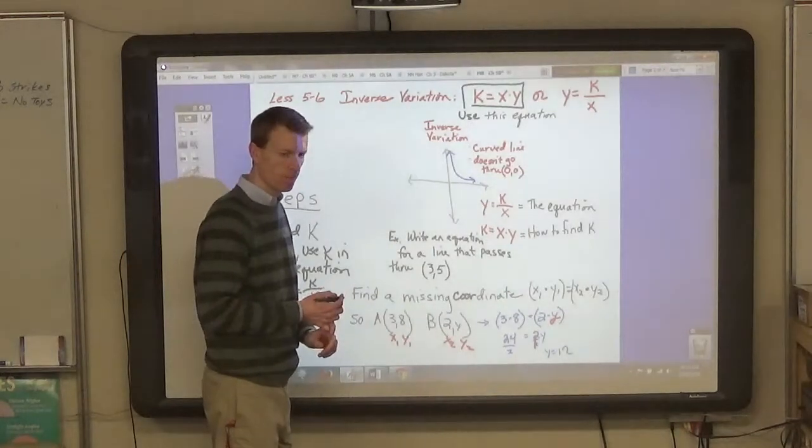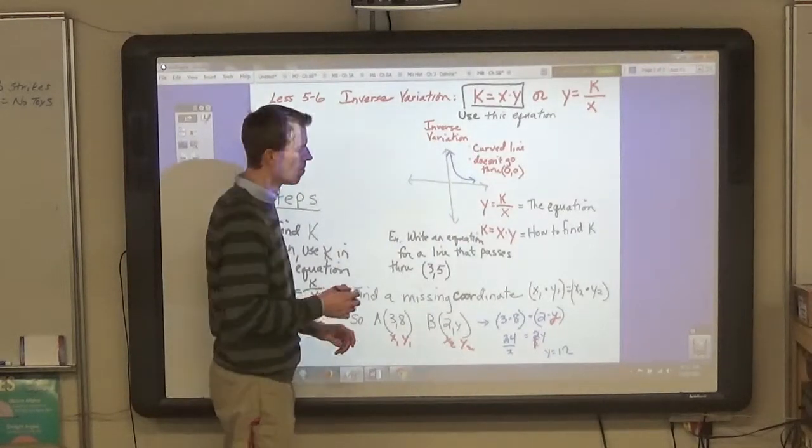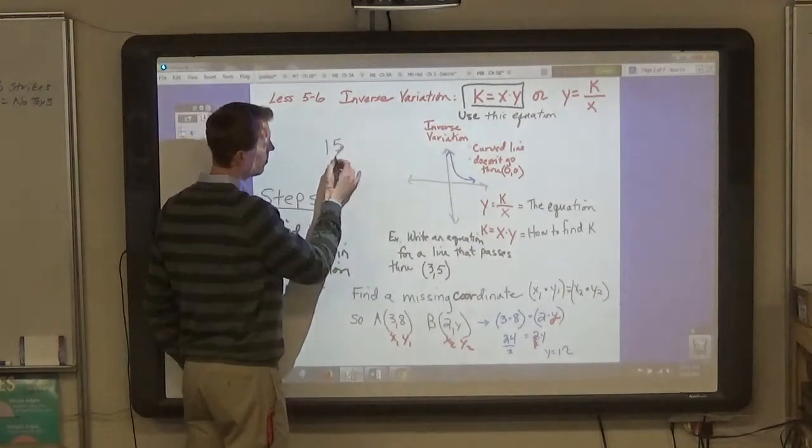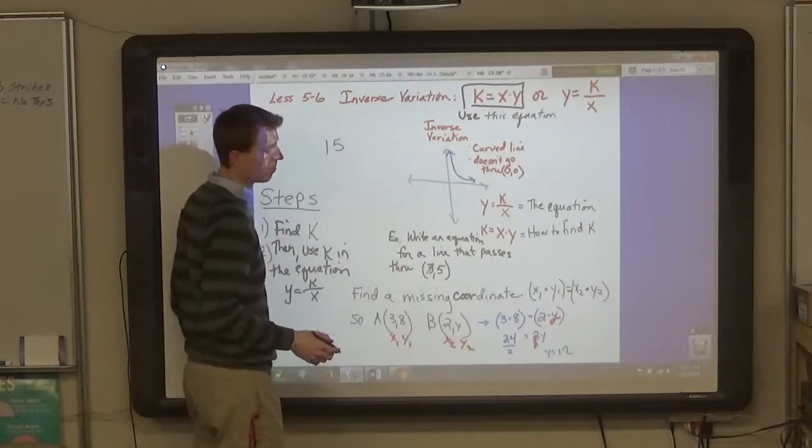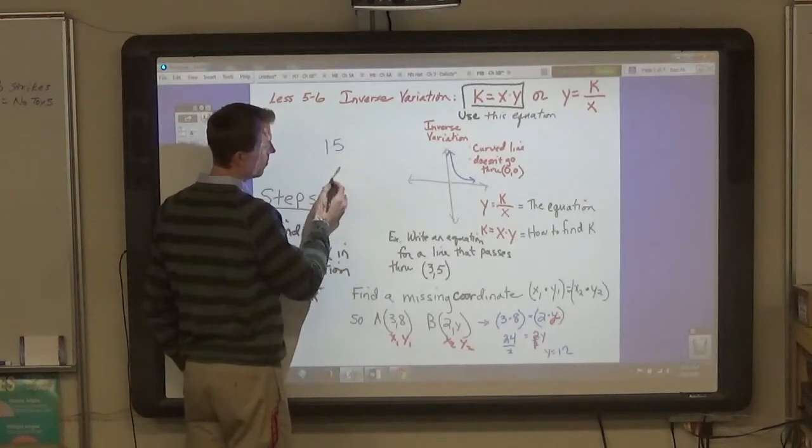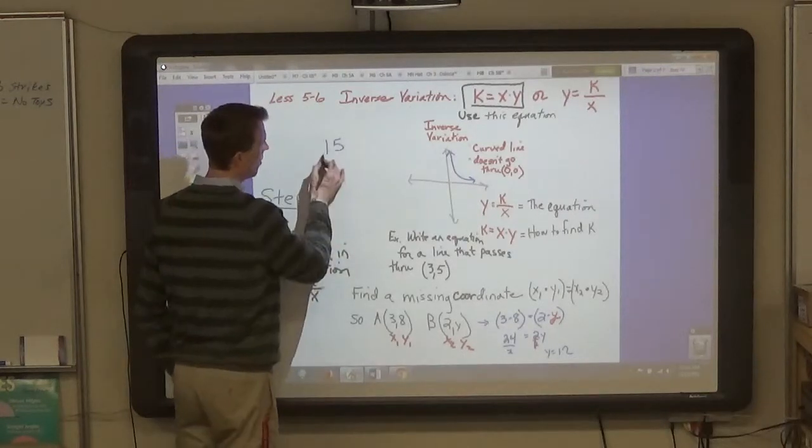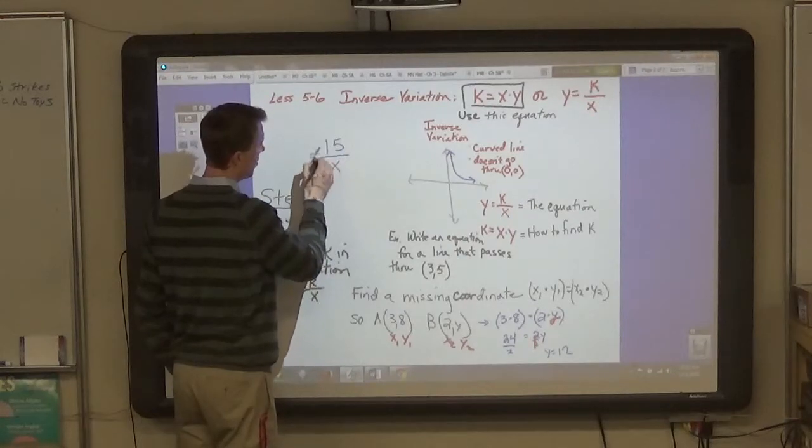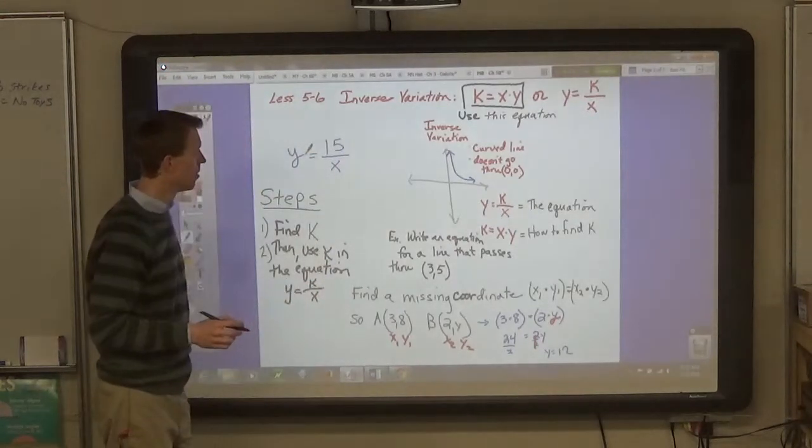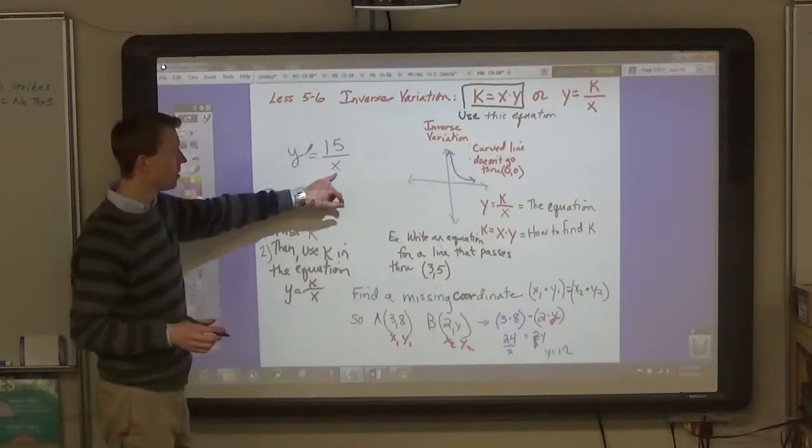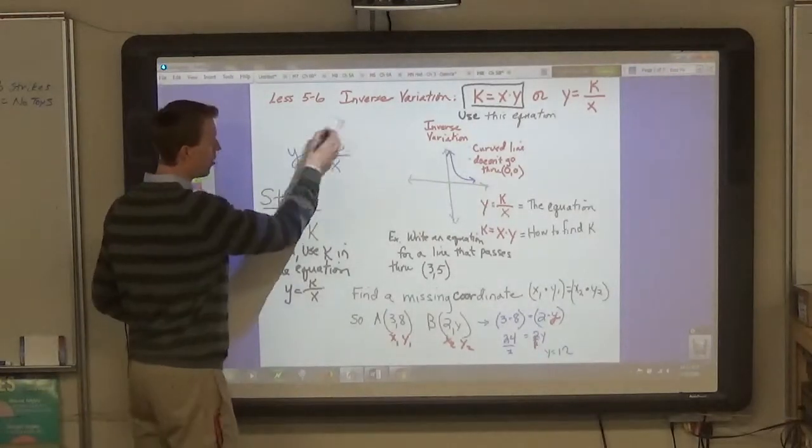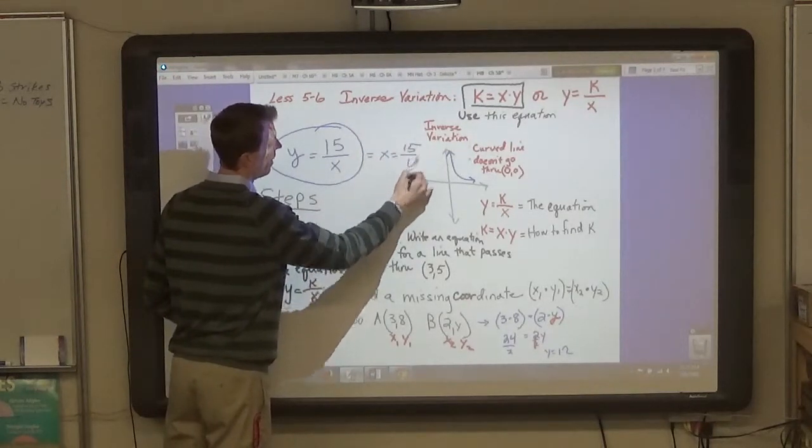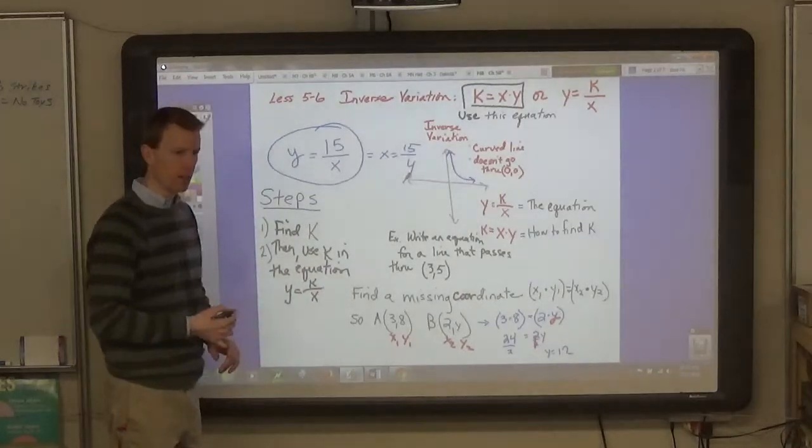So k divided by x is 5, because 3 is x and 5 is y. Then, why can't you do 15 divided by 5 equals x? Well, you can to get an answer, but to write an equation, you can't write the equation as x equals 15 divided by y. You have to write the equation as y equals 15 divided by x.